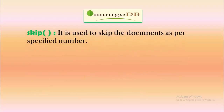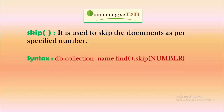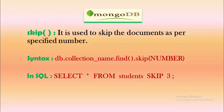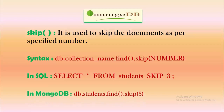The skip method is used to skip documents as per the specified number. The syntax is db.collectionName.find().skip(number), where the method accepts how many documents to skip. In SQL, this can be written as SELECT * FROM students SKIP 3, meaning the first 3 rows of the students table will be skipped and the rest returned. In MongoDB, db.students.find().skip(3) skips the first 3 documents and shows the remaining documents from the students collection.